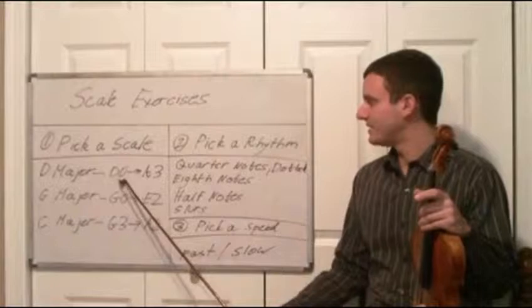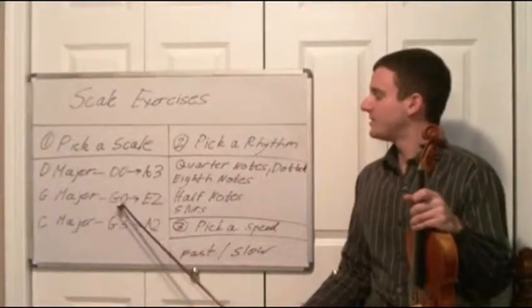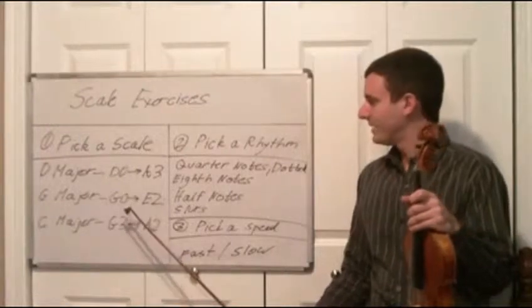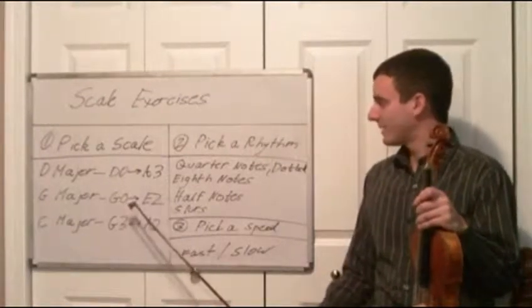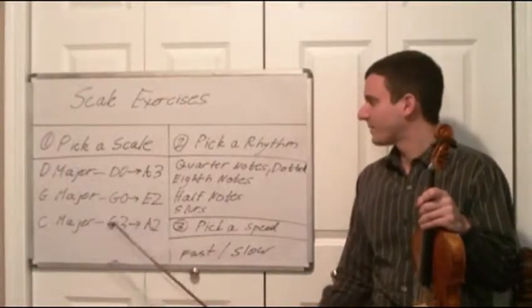With D major you're going to start on D0, go up to A3, and you can come back. G major you're going to start on G0, go up to E2, and then come back. C major you're going to start on G3, go to A2, and then come back.